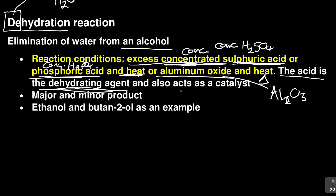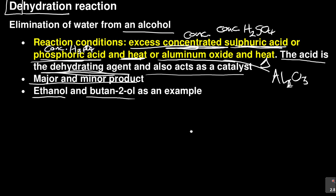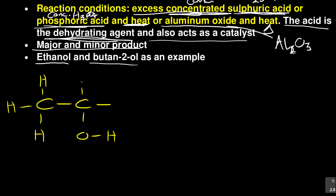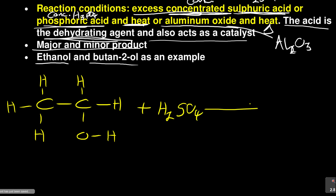Now use ethanol and butan-2-ol as examples. Let's start with ethanol — how can we dehydrate ethanol? If I've got ethanol, ethanol is simple to draw — it's C₂H₅OH. So in the presence of heat and concentrated H₂SO₄, we proceed with dehydration.